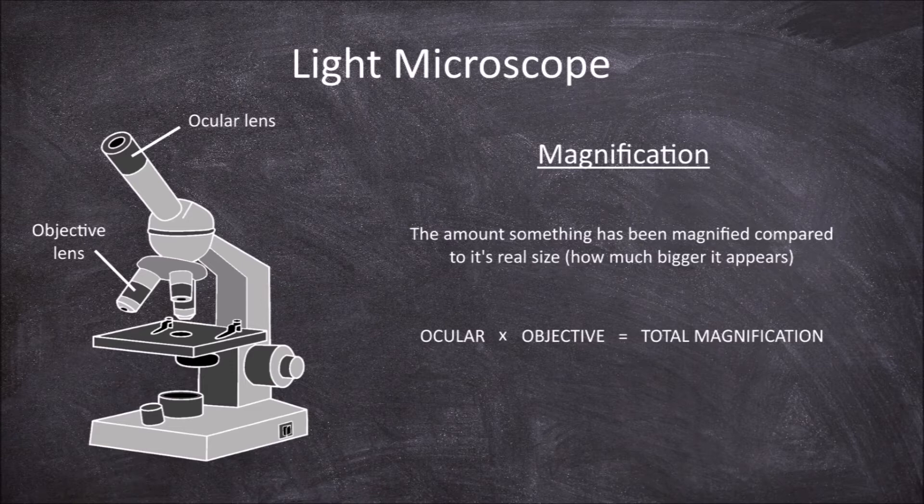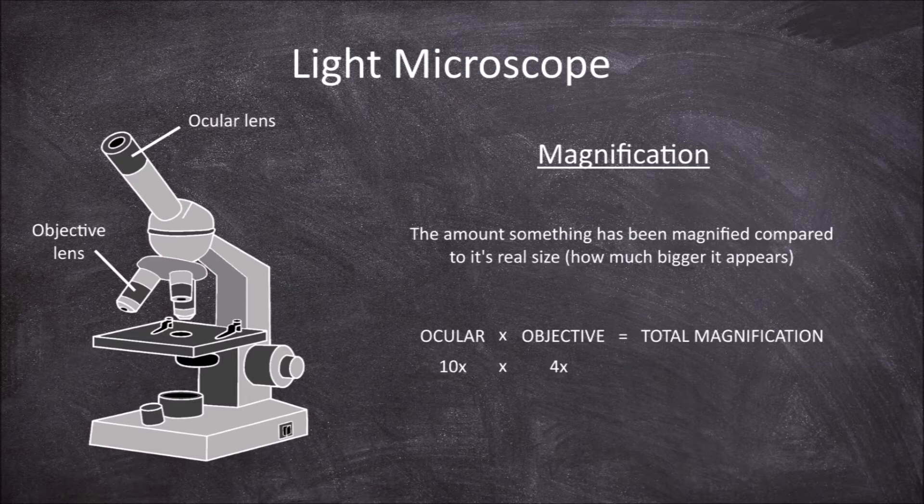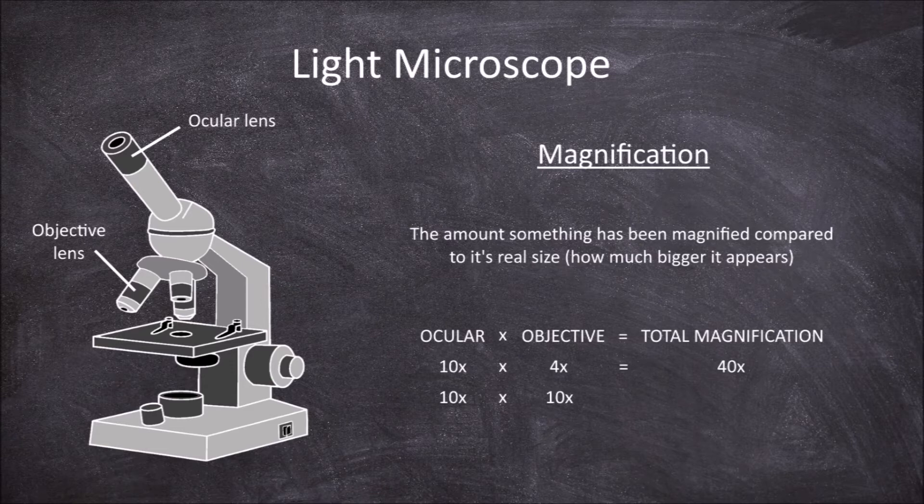If you have an ocular lens with the magnification of 10 times, and you are using the objective with the magnifying power of 4 times, the total magnification would equal 40 times. If you have the same ocular lens, but instead we are looking at the object now with the 10 times objective lens, it would be 10 times by 10 times, with the total magnification of 100 times.